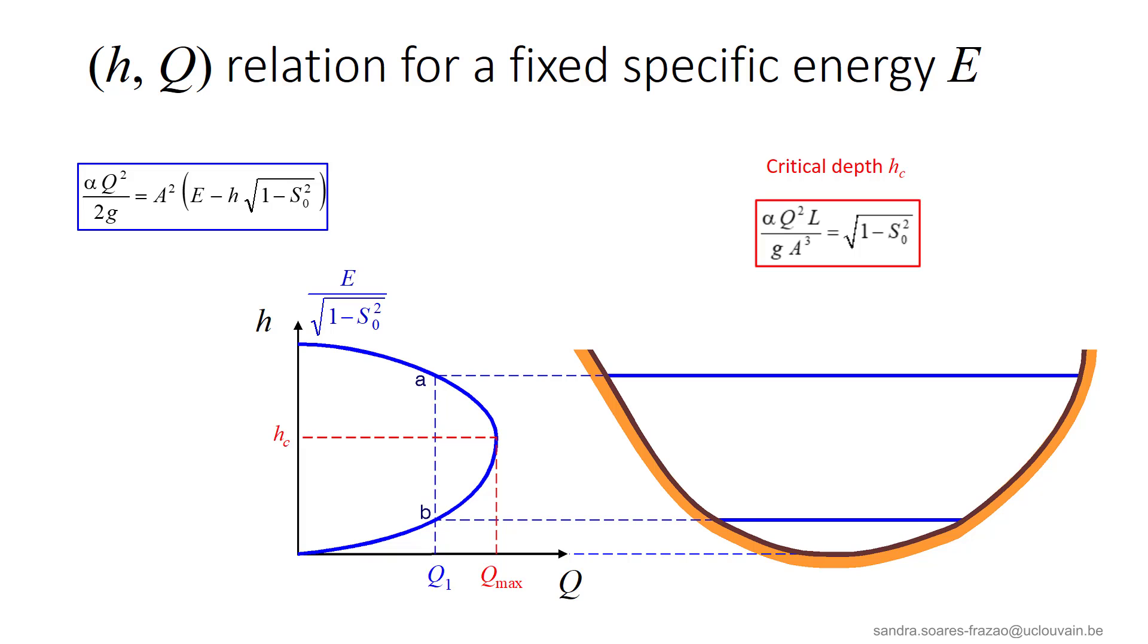The depth of the maximum discharge is called the critical depth and is denoted Hc. So, for a given specific energy, Hc is the most efficient depth, that is, the depth that maximizes the discharge in the channel.